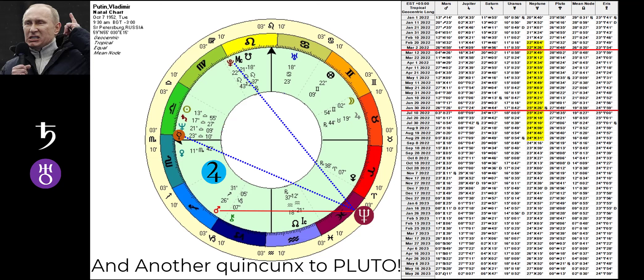Meanwhile, Jupiter, from here until May, is doing quincunxes to all his Libra planets, one after the other, and when it enters Aries in mid-May, where it travels until November, it isn't much good either, because, at least by sign, it will be opposing his Libra stellium of planets.